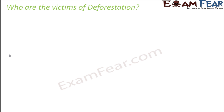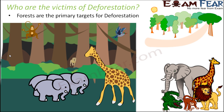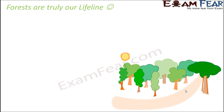Although human beings are the main cause of deforestation, the real victims are the animals, insects, and birds living in forests, since they lose their habitat and food sources, making survival very difficult. Forests are the primary targets of deforestation, and the primary impact falls on the living organisms residing there. However, indirectly, deforestation impacts all living organisms on Earth.